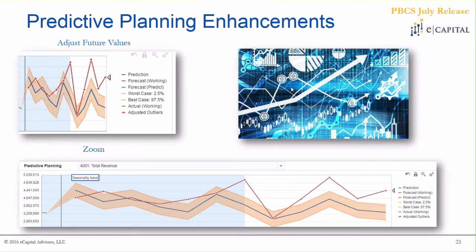You also have the ability to zoom into just the predictive area. As illustrated in the first screenshot, the majority of what was initially shown with predictive planning through the web was the historical data set, with the predictive piece being maybe one fourth of the interface. There is now a zoom button that takes your interface and expands it to show just the predictive piece, so you can customize where you want to start your adjustments of future values.